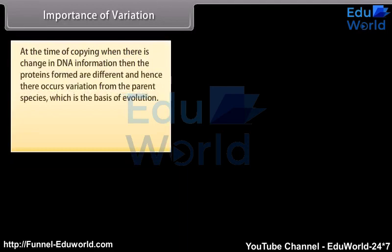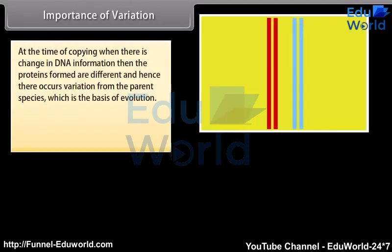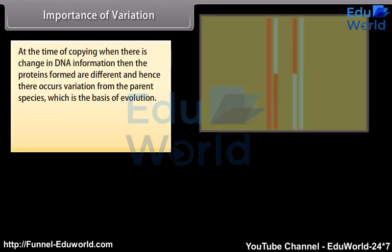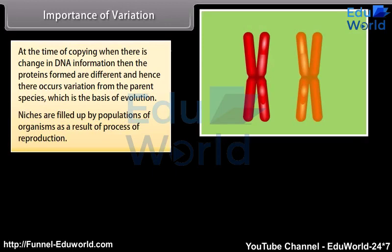At the time of copying, when there is a change in DNA information, the proteins formed are different, and hence there occurs variation from the parent species, which is the basis of evolution. Niches are filled up by populations of organisms as a result of the process of reproduction.